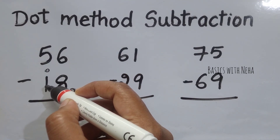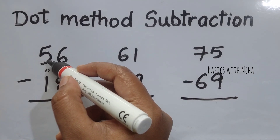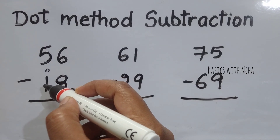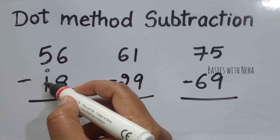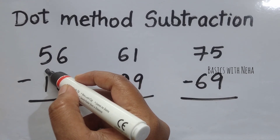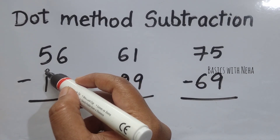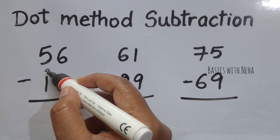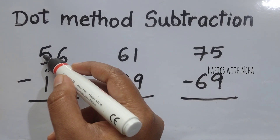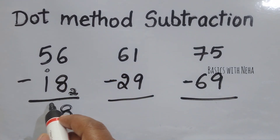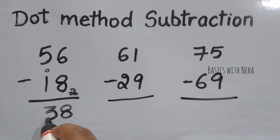Now 5 minus 1 is possible because the minuend is larger than the subtraction. When the situation is like this, we have to consider this dot to be 1, so 1 plus 1 will be 2, and 5 minus 2 will be 3. My final answer will be 38.